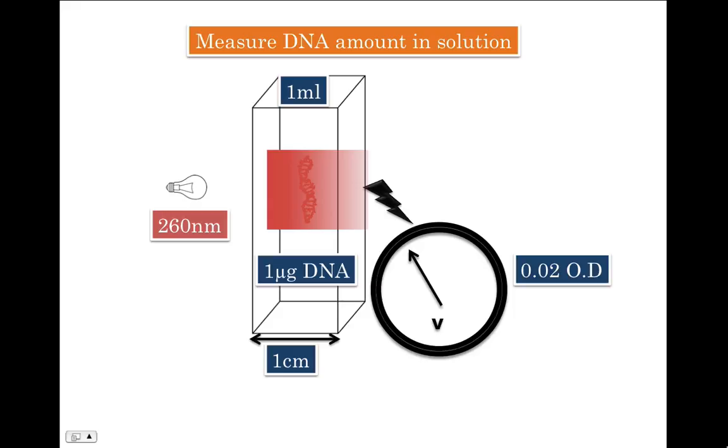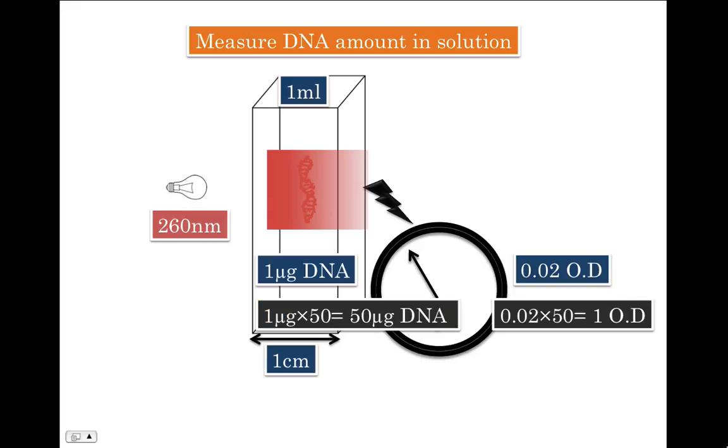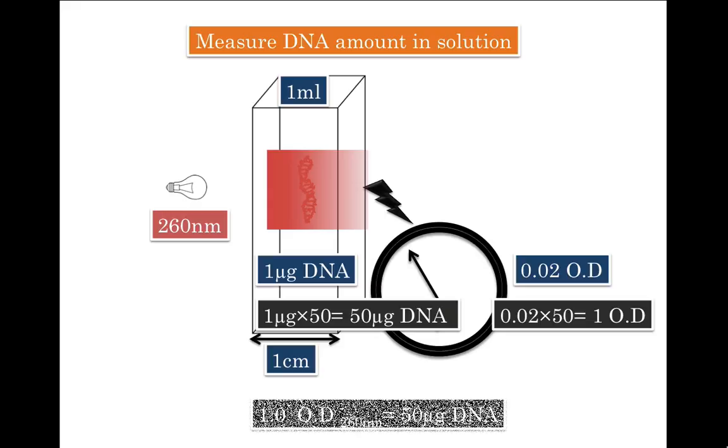Let me multiply 0.02 OD with 50 which will give me 1 OD. In that case, I'll have to also multiply DNA amount with 50 which will give me 50 micrograms DNA. This way, we derive the relationship between DNA and optical density which is 1 optical density at 260 nanometer corresponds to 50 micrograms of DNA. We are going to use this relationship extensively in future to measure amounts of DNA in unknown sample.